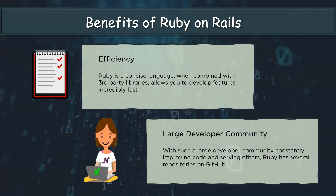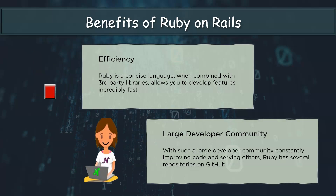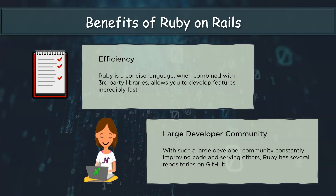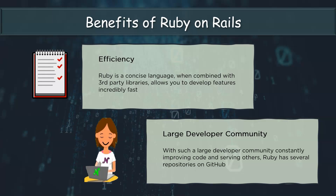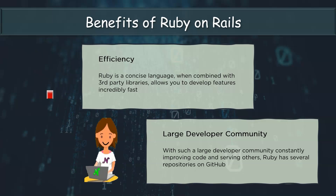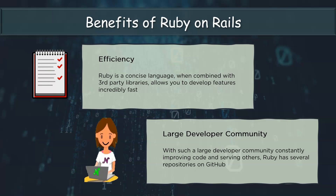And lastly, talking about a large developer community, Ruby on Rails has a very active and thriving developer community, constantly improving code and serving others. It also has several repositories on GitHub. So these are some of the benefits of Ruby on Rails.